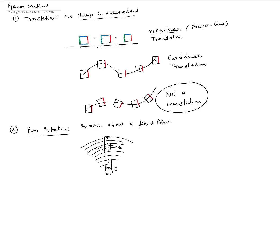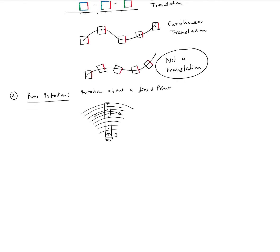So pure rotation is basically rotation about a fixed point. If you can find a fixed point — whether on the object or outside the object — that doesn't move, then that's a rotation about a fixed point. A third kind of motion is what we call general planar motion. As the name implies, general planar motion combines translation with rotation.